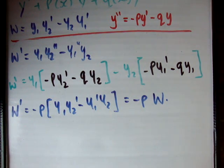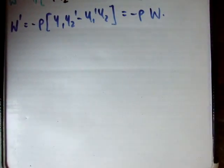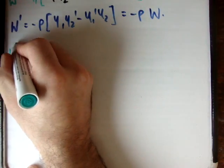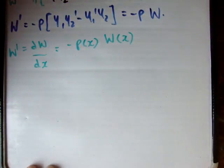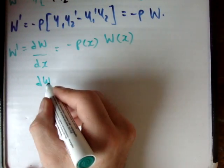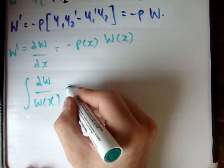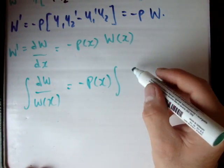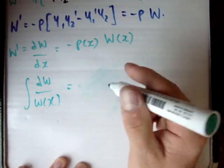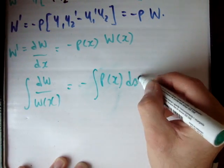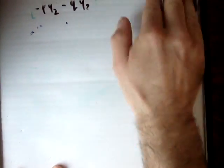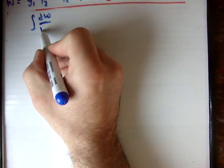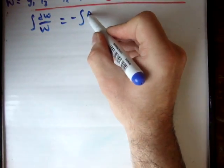So w prime equals dw/dx equals negative p(x) times w(x). Let's do a small separation of variables: dw over w(x) is equal to negative p(x) dx. Integrating both sides gives us the integral of dw over w equals negative the integral of p dx.